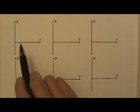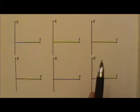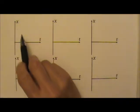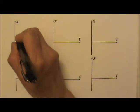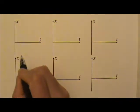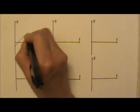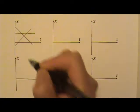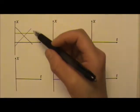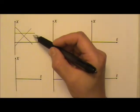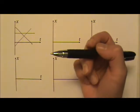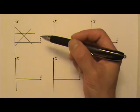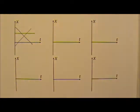Now let's look at some position versus time graphs. If your position versus time graph is any kind of a straight line — it can be going up, horizontal, or slanted downward — what can you say about the velocity and acceleration of the object?